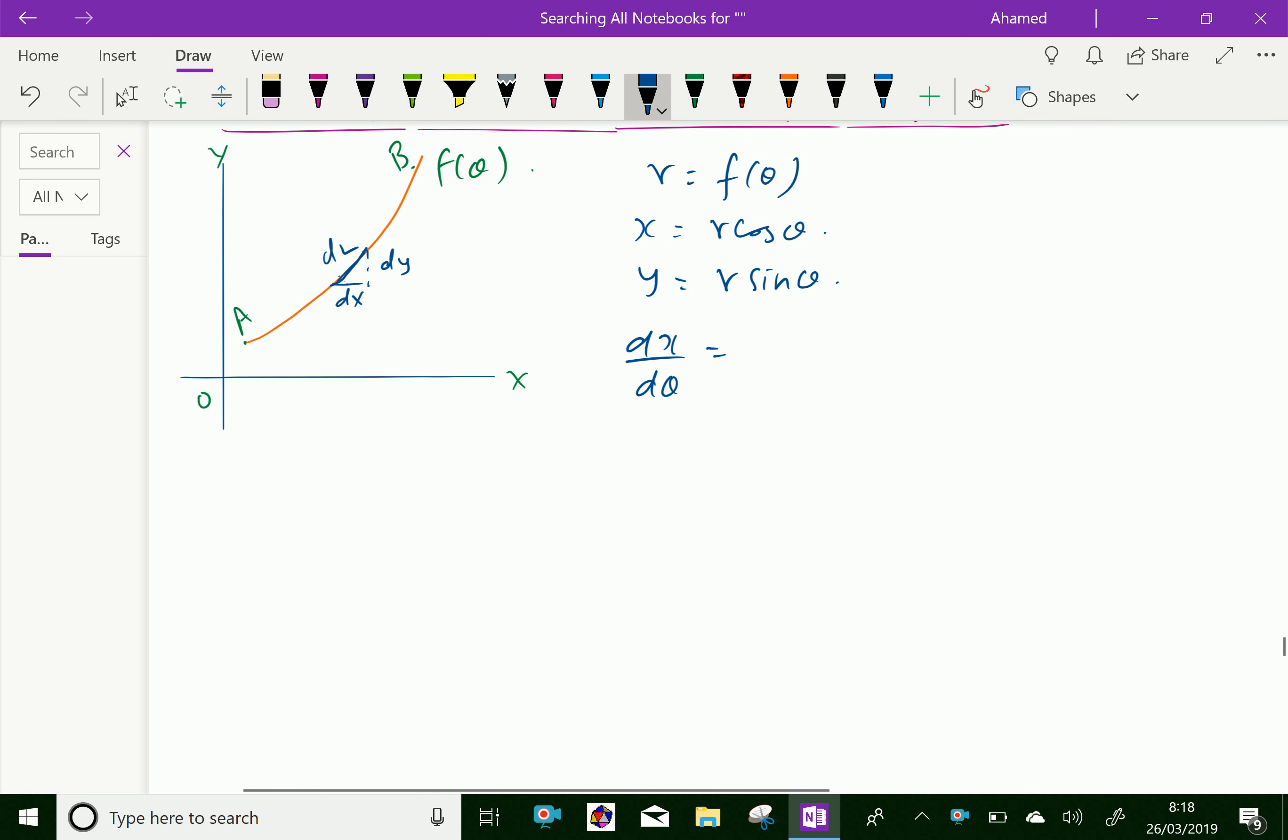Similarly, you can write dY by d theta. Differentiate y equals r sine theta with respect to theta. We get r dash sin theta plus r cos theta.